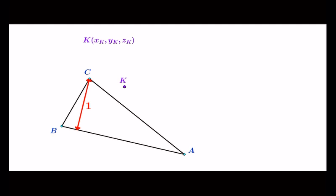It is not necessary that this is the case, but let us imagine that it is. The coordinate z_K is the distance of point K from side AB.